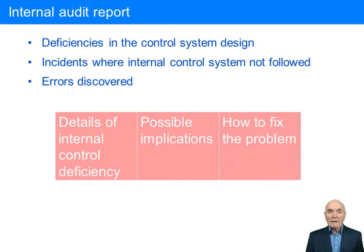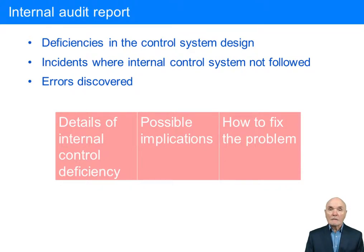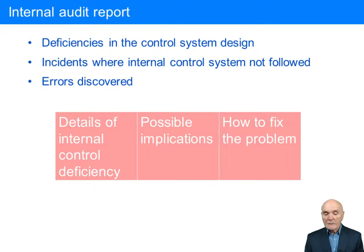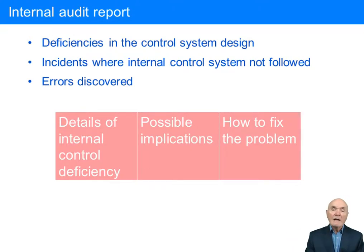Or the problem might be that although the control should be there in theory, there's been a lapse. The report will then normally point out the dangers of this lapse or absence of internal control, and this is really almost part of selling it to management. Because this internal control isn't there, therefore this could happen. So if invoices are not cancelled after payment, the possible implication is that the invoice could inadvertently go around the system again, and you would make two payments for the one invoice.